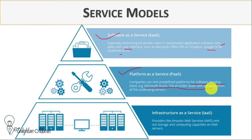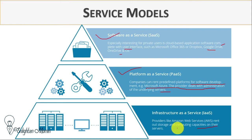Infrastructure as a Service — providers like Amazon Web Services (AWS) rent out storage and computing capabilities on their servers. Basically, the three types of services in cloud computing are software, platform, and infrastructure. When you establish a server, you first need infrastructure, then a platform for deployment, and finally the software to run.